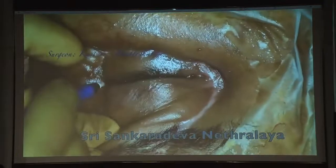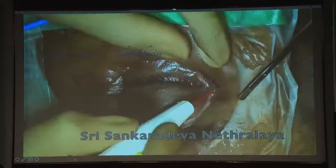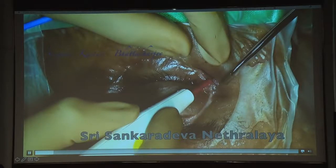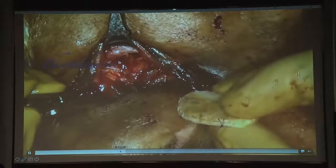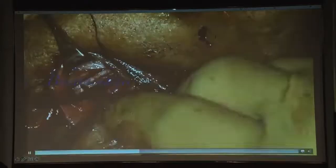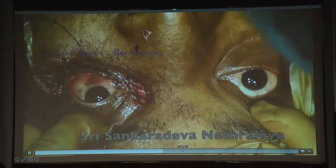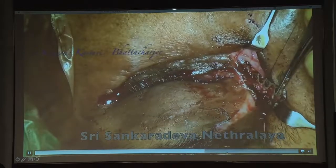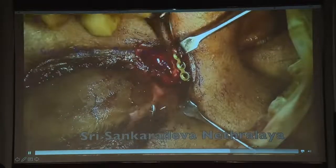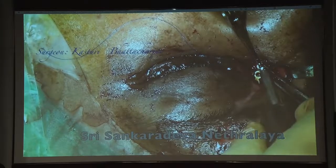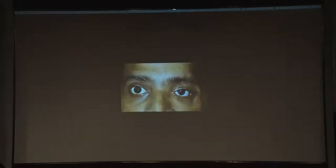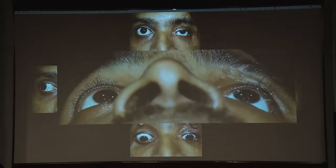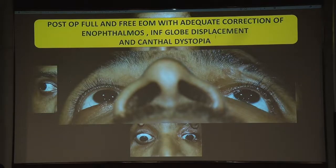During surgery, working through the same scar line, I placed a double-layered Medpor sheet. The buttresses were corrected on the table. This patient also had medial canthal dystopia, which was corrected as well — though canthal dystopia correction is a large chapter in itself. You can see the final correction of enophthalmos and the post-operative result.